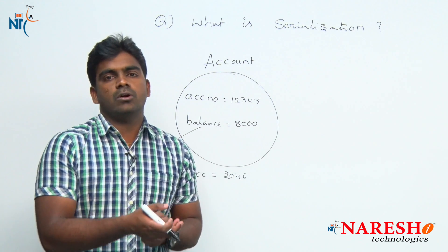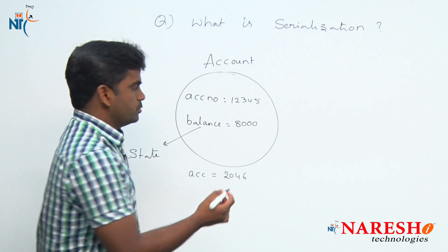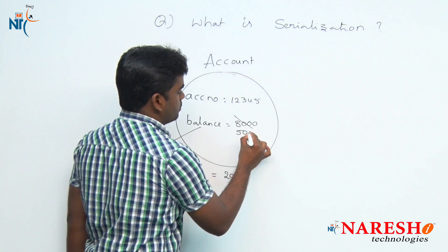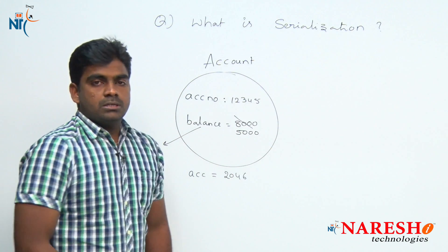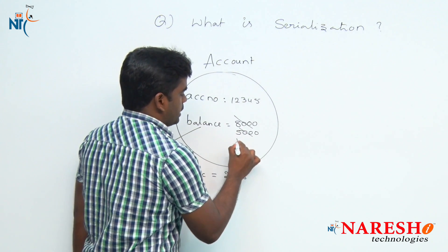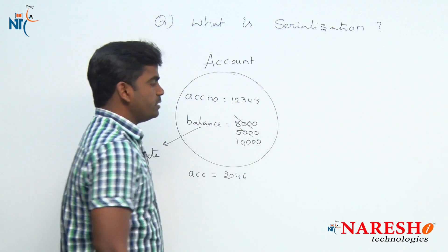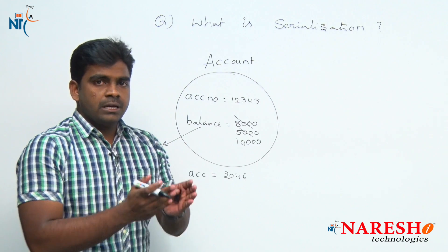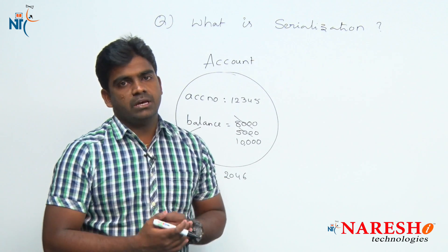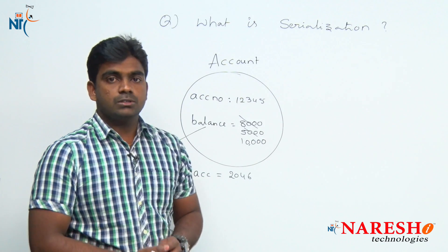For example, if you perform a withdrawal operation and withdraw 3000 rupees, 8000 minus 3000 gives a value of 5000. If you then deposit 5000 rupees, 5000 plus 5000 becomes 10000. Like that, from time to time, depending on the operations we are performing, the state will change.